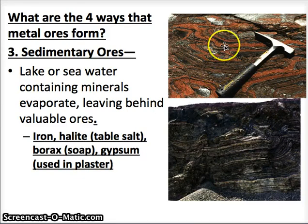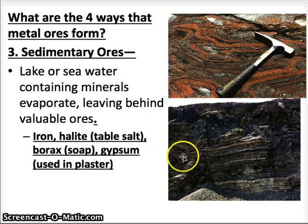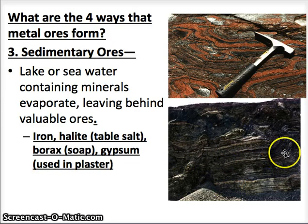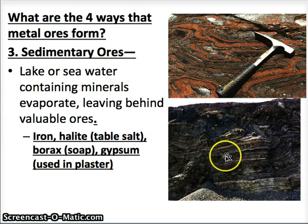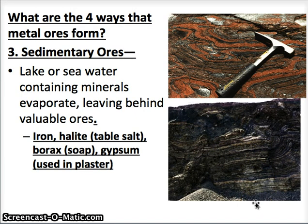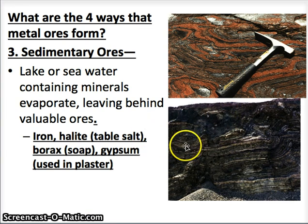The third way metal ores form is through sedimentary rock — we call these sedimentary ores. When lake or seawater containing minerals evaporates, it leaves behind valuable ores that get preserved in sedimentary rock layers. Iron, halite (table salt), borax — a mineral found in soap — and gypsum, used in plaster, usually form in this way.